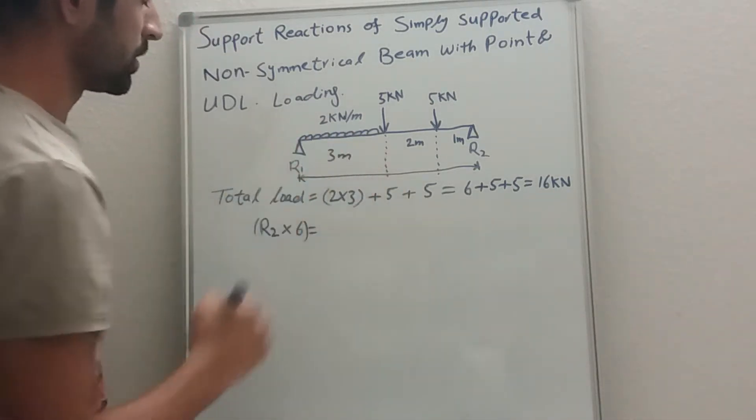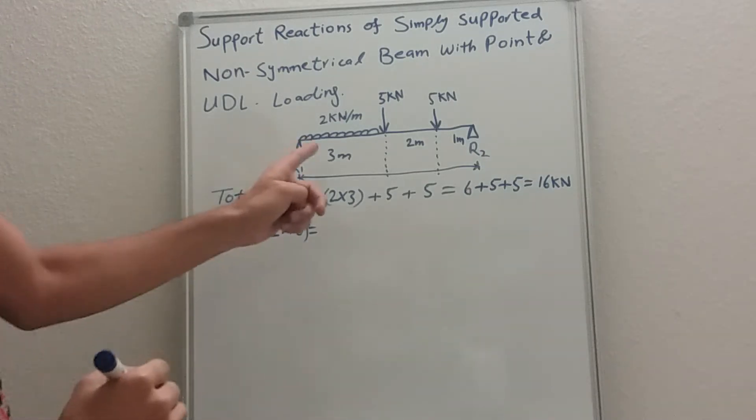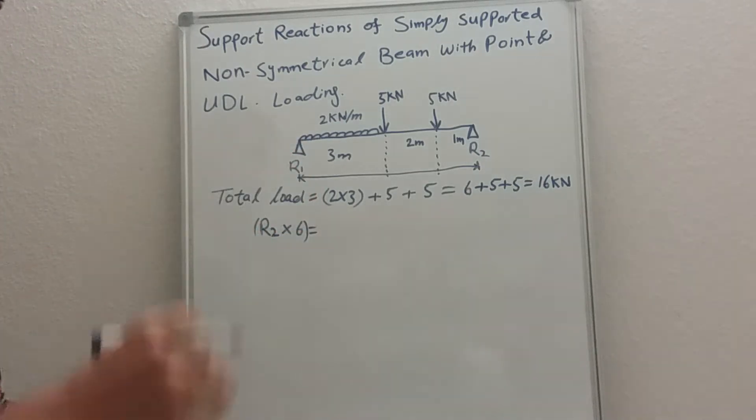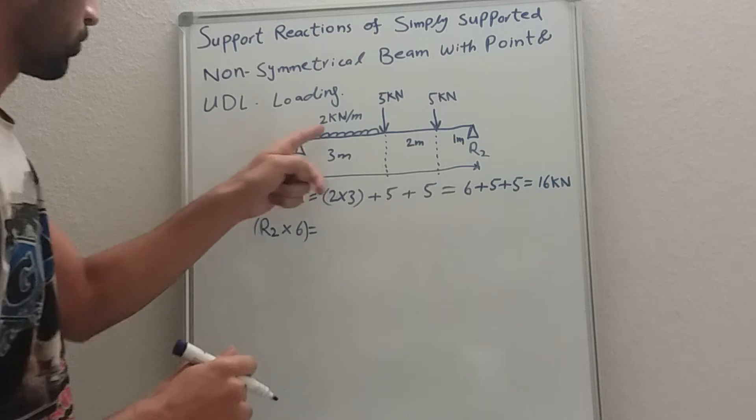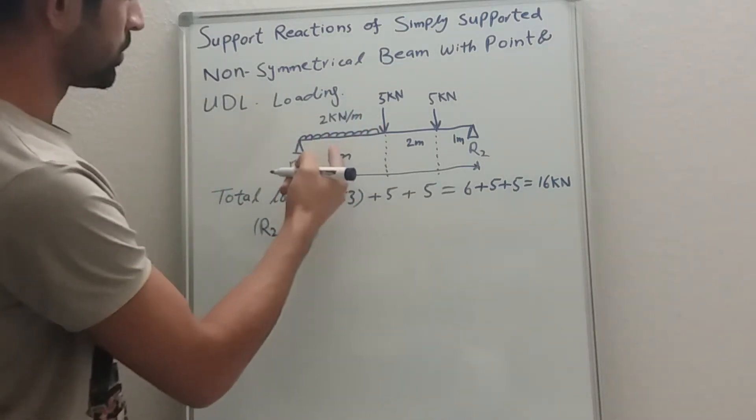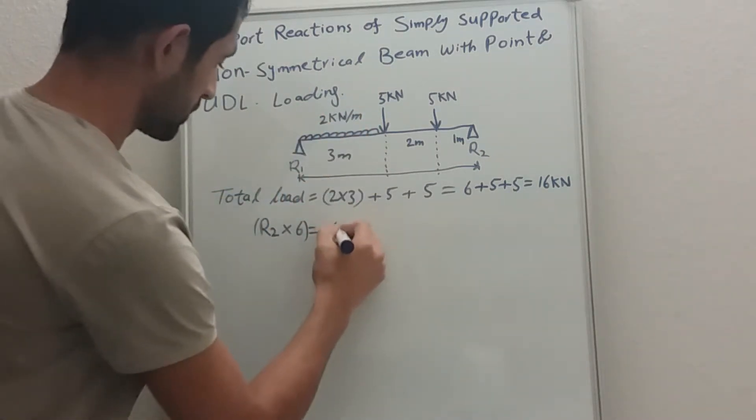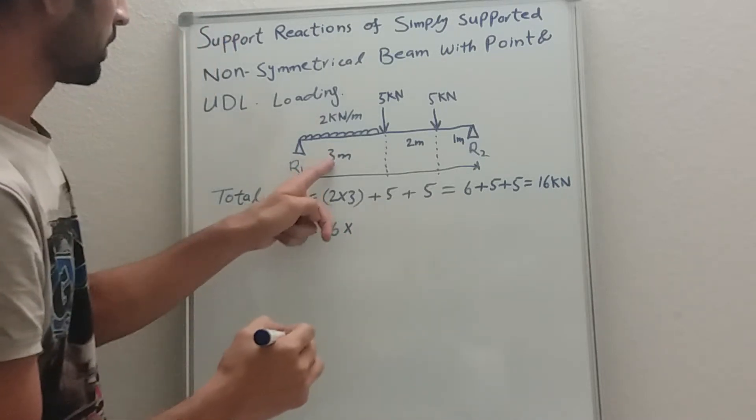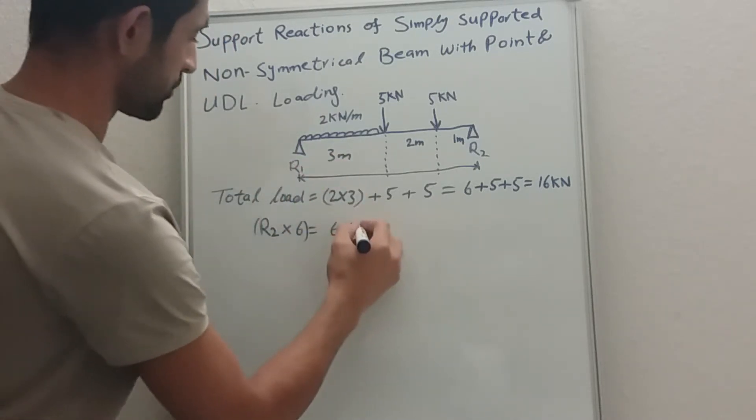Now you need to calculate UDL. There is a simple rule for the UDL: UDL always acts on its half length. So we have total UDL, six kilonewtons, times by half of the distance, which is 1.5.